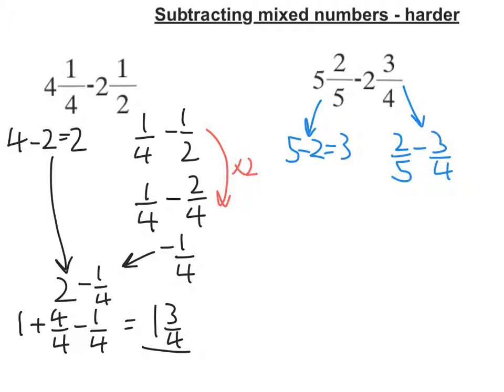Now, I need to find my lowest common denominator. The lowest common denominator of 5 and 4 is 20, so put that in there.